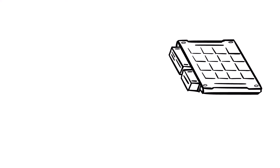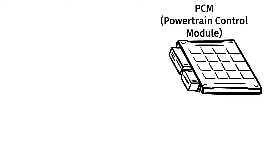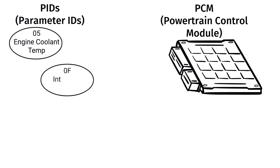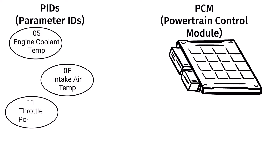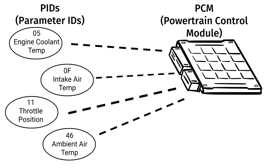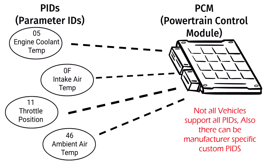First let's go over what live data is. Basically you have your PCM, your powertrain control module, and it's going to talk to various PIDs, which are various sensors and components on your car, and show that data on the scan tool. You might see things like PID 05 for engine coolant temperature, 0F for intake air temperature - those are hex values - then 11 for throttle position sensor, 46 for ambient air temperature. All these sensors send values back to the PCM. Keep in mind all makes and models have different PIDs, so something I show here might not appear on a different car.